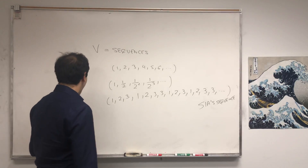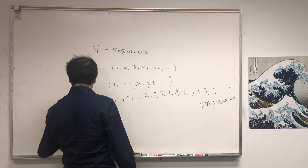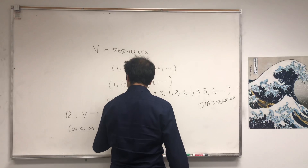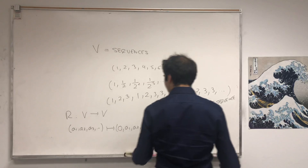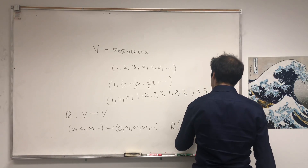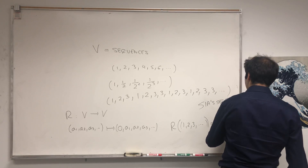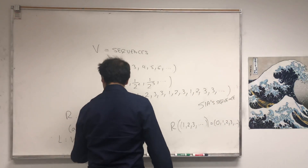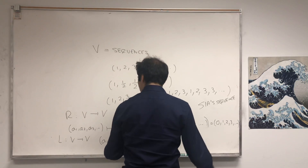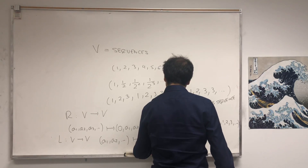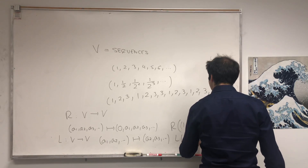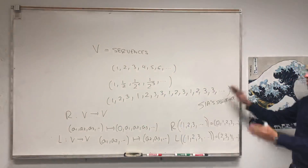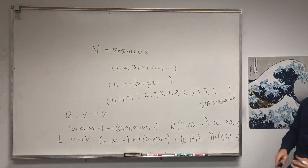Define R from V to V as follows: it takes a sequence a1, a2, a3, and just shifts it to the right, so it becomes zero, a1, a2, a3. And there's a left shift L from V to V that takes a1, a2, a3 and shifts it one unit to the left, so it becomes a2, a3, and so on. For example, the left shift of one, two, three, four, ... is two, three, four, something, something.